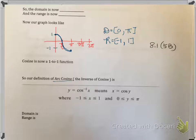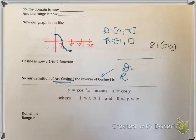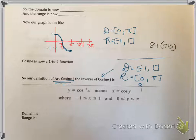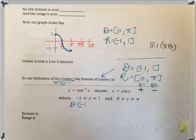For inverse cosine — and you can use the word arc cosine, it means the same thing — whatever the domain was becomes the range and whatever the range was becomes the domain. So the domain for inverse cosine is negative one to one. That's the same as inverse sine, but the range is different: it's zero to pi. In quadrant one you'll have positive angles, and in quadrant two you'll have values that are negative, so they get placed into quadrant two. Positive values go to quadrant one, negative values go to quadrant two.